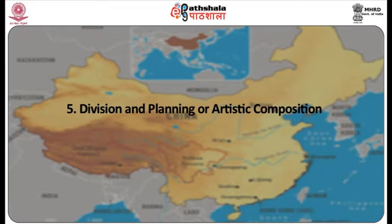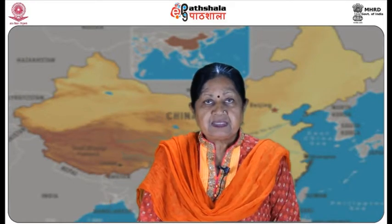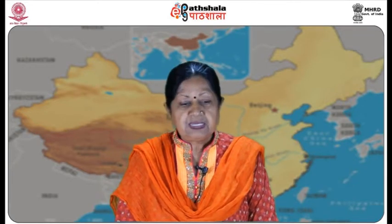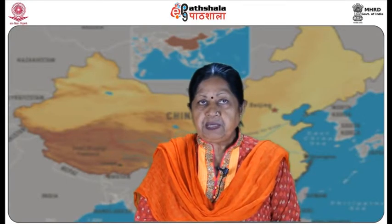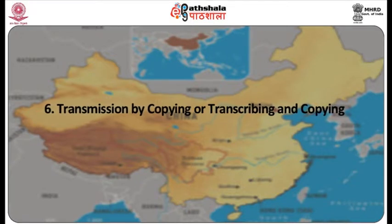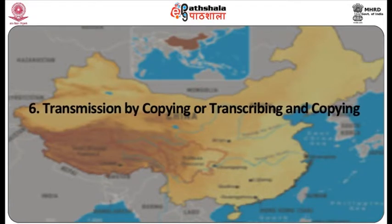The fifth element is division and planning, or artistic composition — in Chinese, Jing Ying Wei Zhi — that is the placing and arrangement of elements corresponding to composition, space and depth, thereby corresponding to the principle and in some degree to natural law.